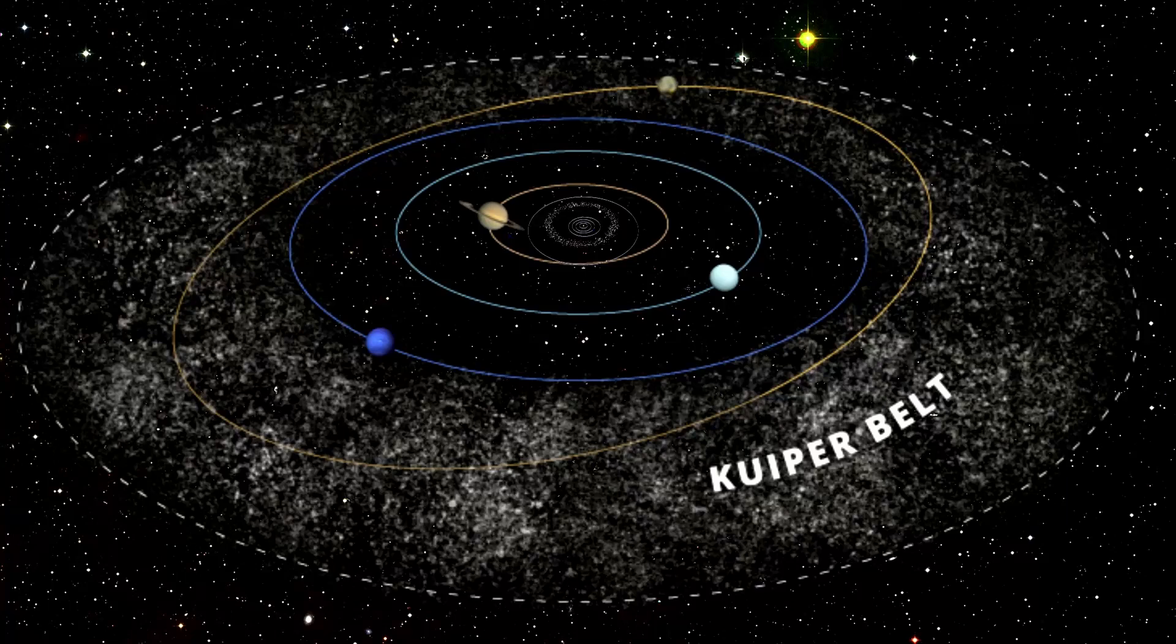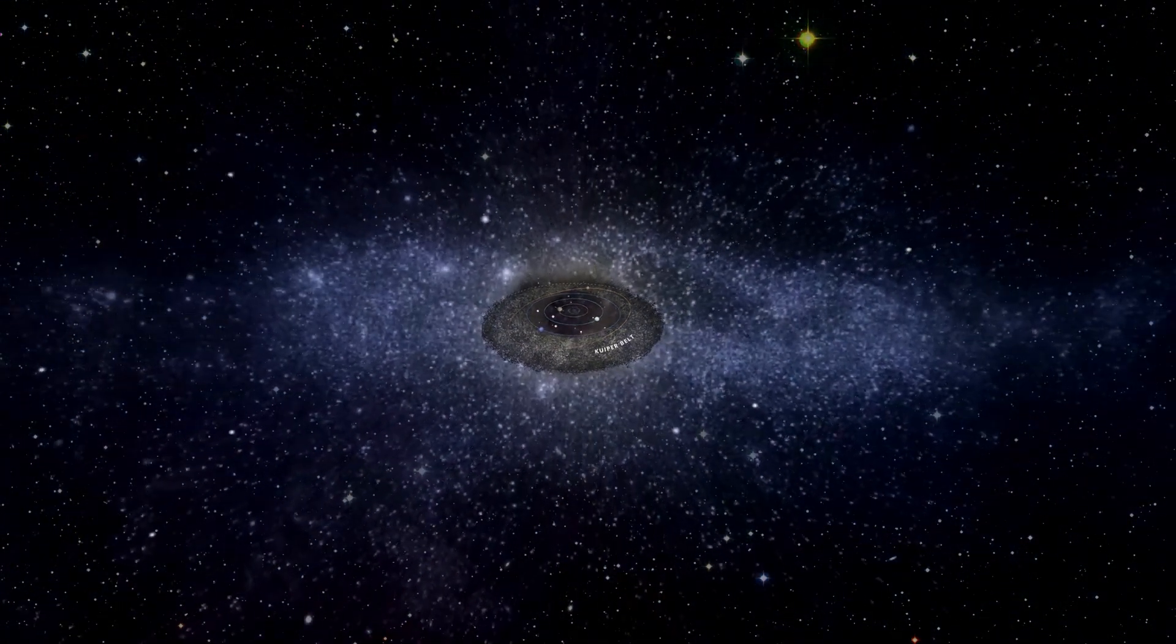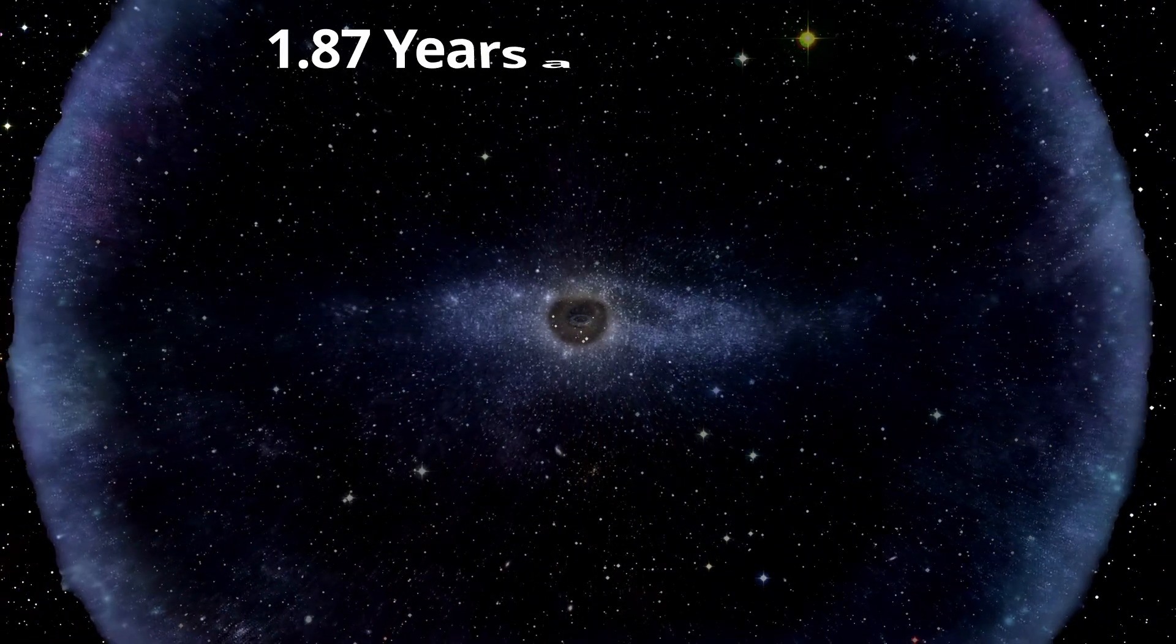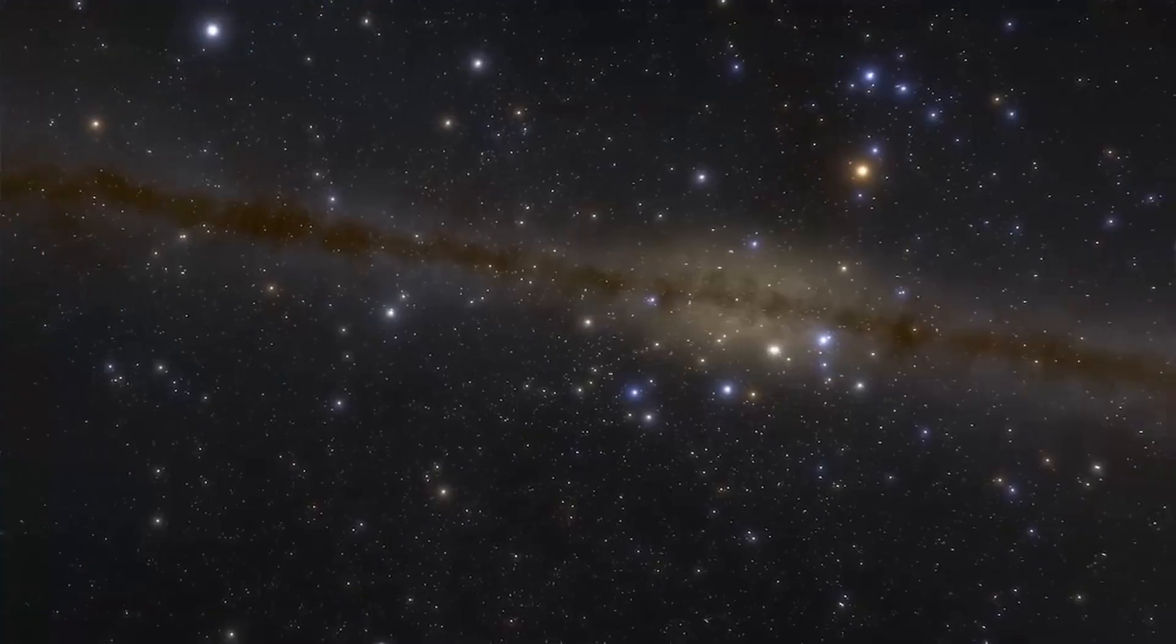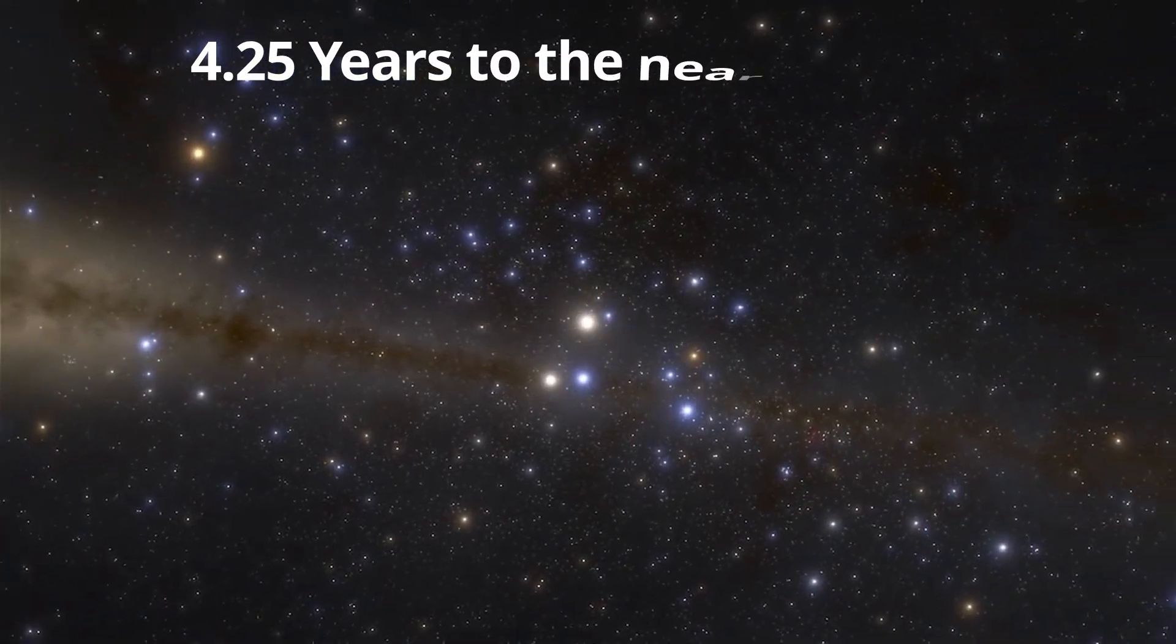A trip at light speed to the very edge of our solar system, the farthest reaches of the Oort cloud—a collection of dormant comets way out there—would take about 1.87 years. Keep going to Proxima Centauri, our nearest neighboring star, and plan on arriving in 4.25 years at light speed.